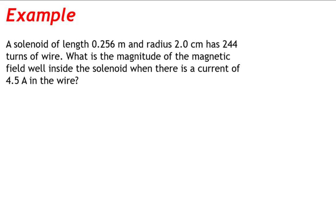A solenoid of length 0.256 meters and radius 2.0 centimeters has 244 turns of wire. What is the magnitude of the magnetic field well inside the solenoid when there is a current of 4.5 amps in the wire?